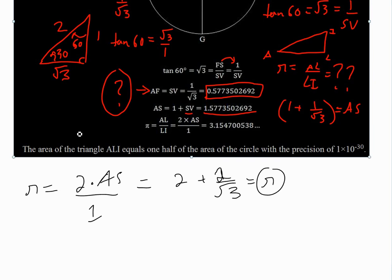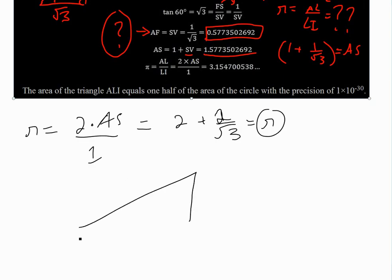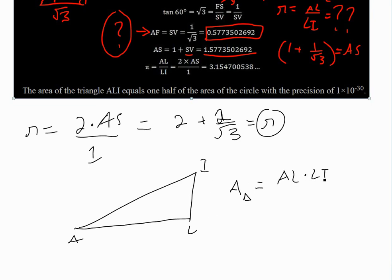Then there's this last assumption: the area of the triangle ALI equals one half of the area of the circle — of some position of this — to 1 times 10 to the negative 30, which is preposterous. I have no idea what he's doing here. So basically, even if you have it here, you're going to have a different equation. He's saying that triangle ALI — he's saying the area of it is equal to one half the area of the circle. I don't know — did he draw this? How does he have a position of this? So he goes: area of a triangle — recall it's just base times height divided by 2 — so you're going to have AL times the height LI divided by 2.